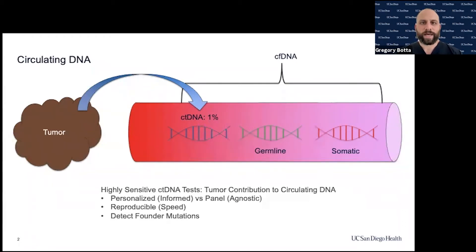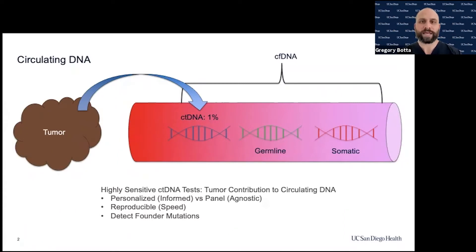ctDNA has reproducible speed, and the fact that it takes a representative sample derived from the blood as a gene signature enables someone to follow a patient's tumor — specifically their own tumor — in the blood. Lastly, it permits detection of founder mutations, otherwise known as truncal mutations, such that even as the tumor spreads and metastasizes, you're still able to detect those initial mutations in the tumor DNA as well as within the bloodstream.